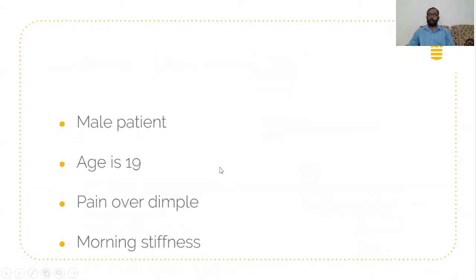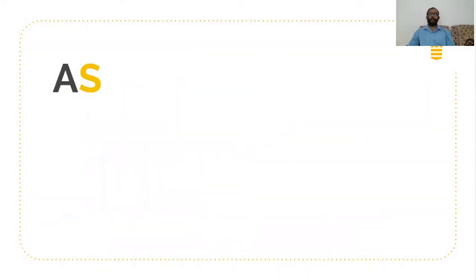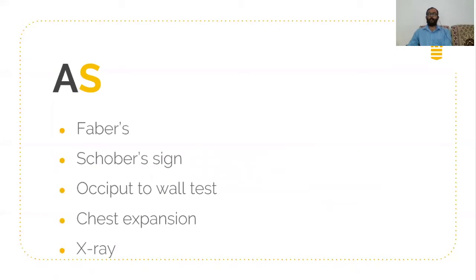A second case is presented: a male patient aged 19 with pain over the dimple and morning stiffness. If a patient is between 16 and 25, is male, and has morning stiffness along with pain over the dimple, we shall suspect ankylosing spondylitis and proceed with clinical examination. In AS, clinical examination is more important than radiological or hematological investigation. The clinical examination mainly includes tests for sacroiliitis, because fusion starts in the sacroiliac area and continues from lower to upper.